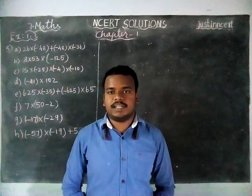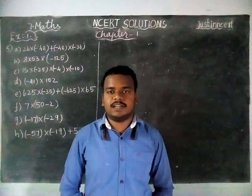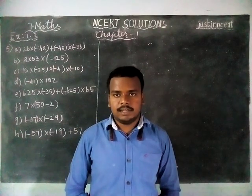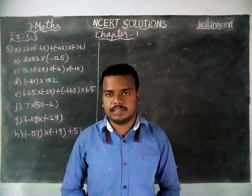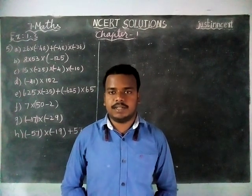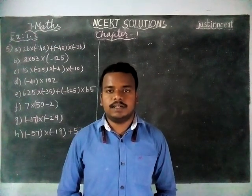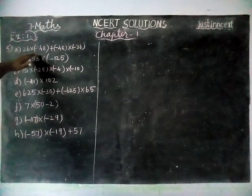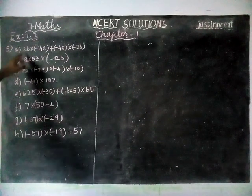Hi students, welcome to NCRT Solutions. In this video, we are going to see 7th Maths, Chapter 1, Exercise 1.3, 5th problem. We have to find the given products by using properties. Before going into the video, those that are already subscribed to our channel, kindly subscribe and spread a word about this channel to your friends. Here, the given numbers — we have to find the product by using any one of the properties.